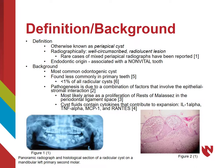Their pathogenesis is caused by many factors rooted in epithelial-stromal interactions. The most likely cause is continued proliferation of epithelial rests of Malassez, which are remnants of Hertwig's epithelial root sheath in the periodontal ligament space.